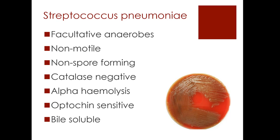It also produces alpha haemolysis. When it's grown on blood agar, it produces hydrogen peroxide, and this partially oxidizes the red haemoglobin to give partial hydrolysis, forming green methaemoglobin — which you can see in the picture on the right. To differentiate between different streptococci in the lab, you use an optochin test. Streptococcus pneumoniae in particular is optochin sensitive, so there will be no growth around the disc. It's also bile soluble, whereas other streptococci will be bile insoluble.